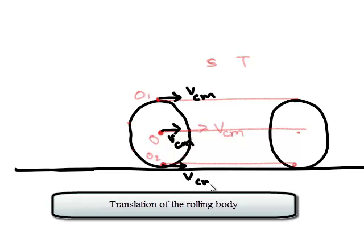This is correct because V_cm is the velocity of the center of mass. These vectors have the same magnitude and the same direction.